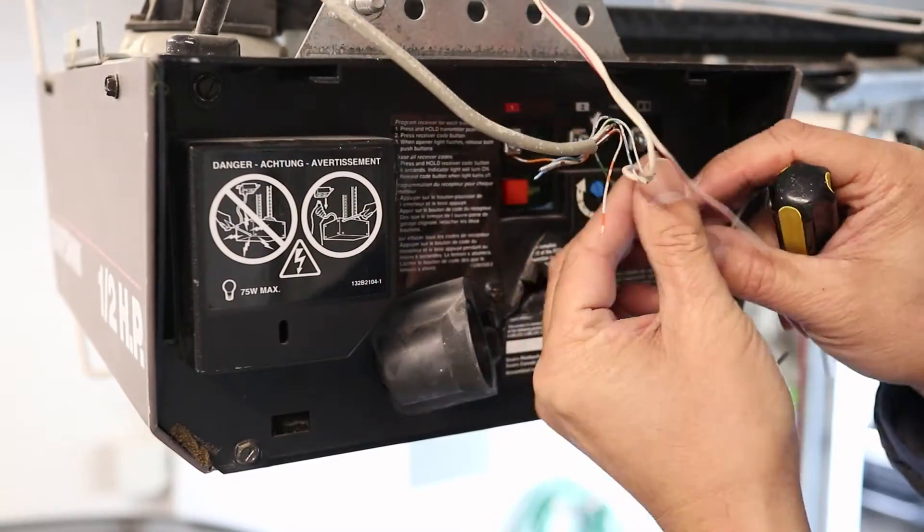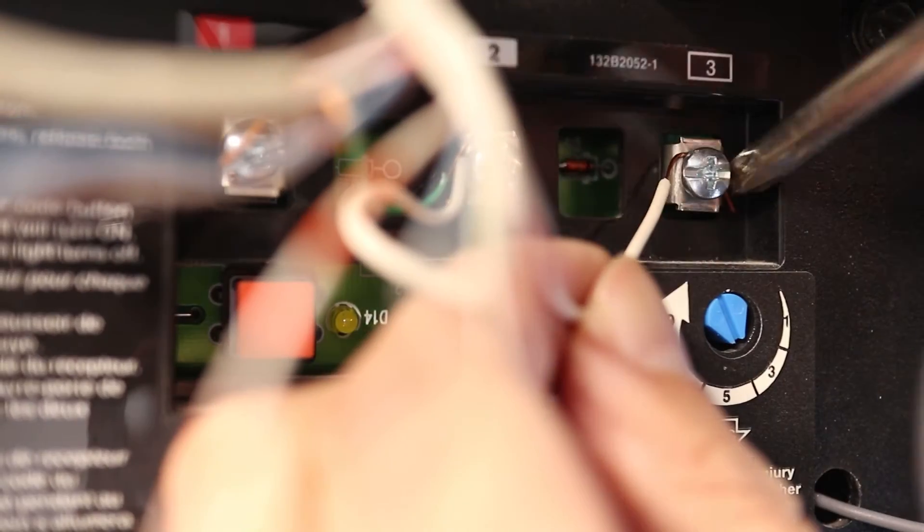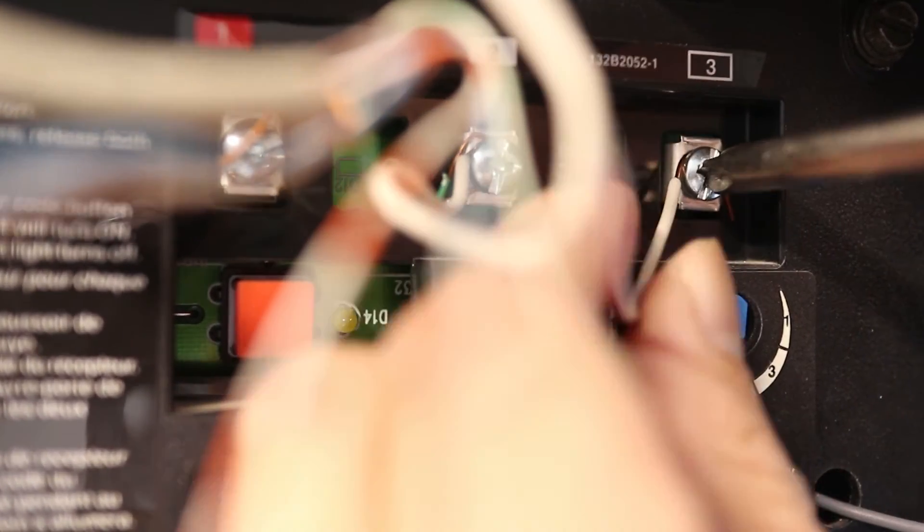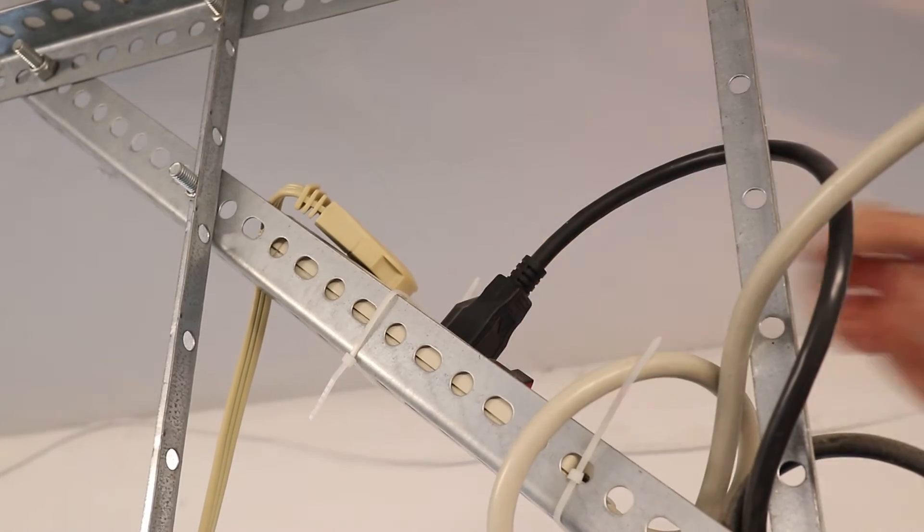When the faceplate is secured, refer to the picture you took earlier to help reconnect everything to the terminals exactly like before. Last thing to do is screw in the light bulb and plug the garage door opener back in.